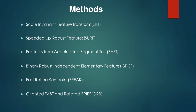The different methods that have been compared and evaluated are: Scale Invariant Feature Transform (SIFT), Speeded Up Robust Features (SURF), Features from Accelerated Segment Test (FAST), Binary Robust Independent Elementary Features (BRIEF), Fast Retina Keypoint (FREAK), Oriented FAST and Rotated BRIEF — a fusion of FAST and BRIEF known as ORB.